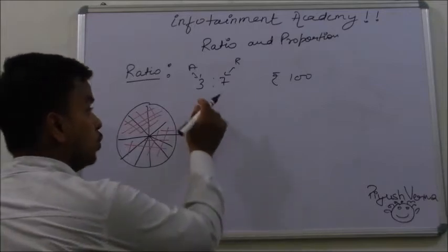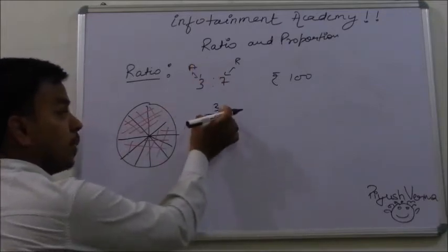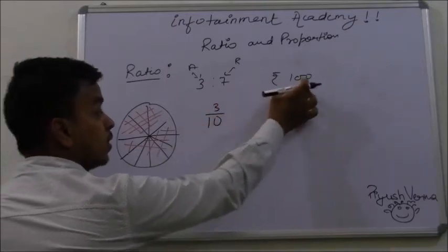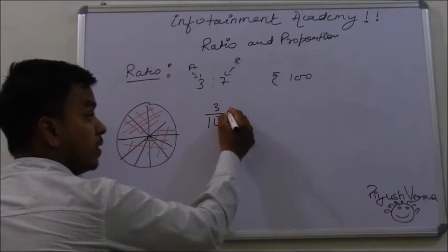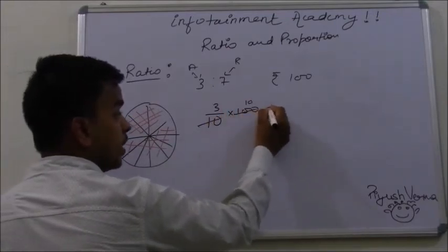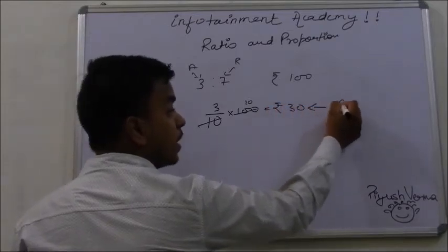In order to find individual ratio, we divide the part of A by the total part. It is 3 upon 10, and the amount we want to distribute is 100. It comes to rupees 30. This is the share of A.